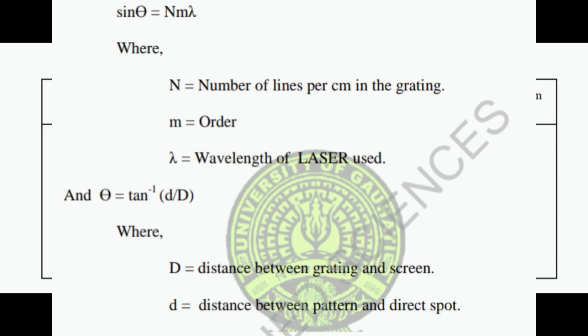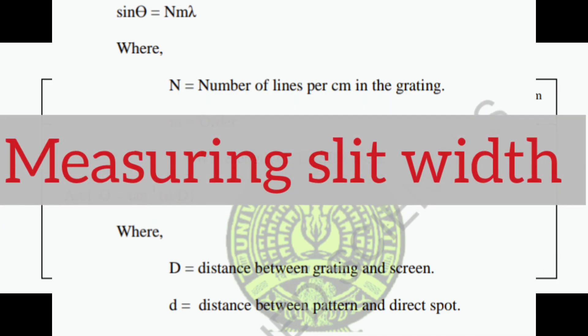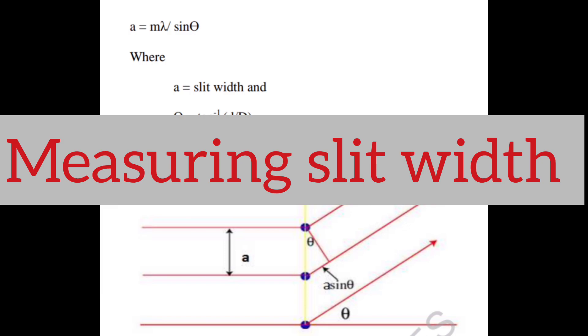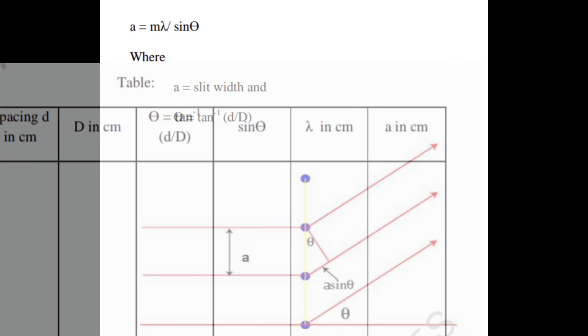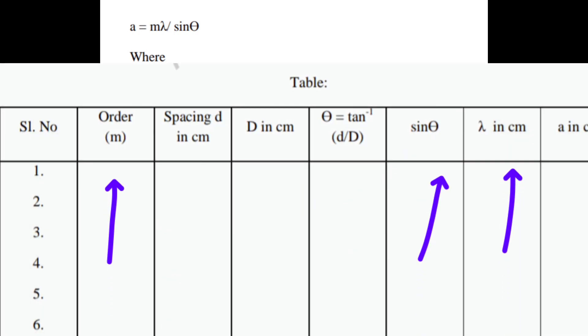That is sinθ = Nmλ from where we can calculate lambda using the value of sinθ from the table. Next we can also calculate the spacing between the lines in the grating which is given by the formula a = mλ/sinθ. As we can see, mλ and sinθ are already calculated in our previous experiment which we had done for the first order and second order grating, so we can use the value and calculate a.